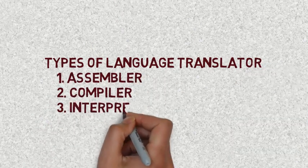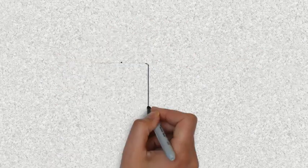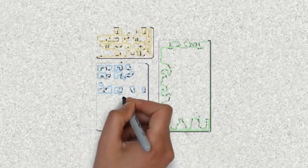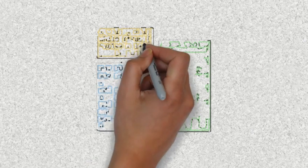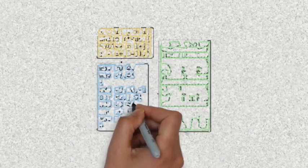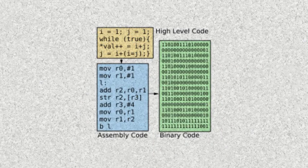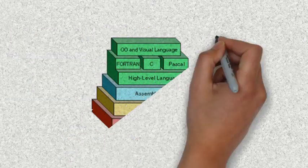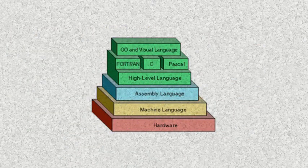We can translate the programming code into machine code. Machine level language is the same as low-level language. The compiler and interpreter can convert high-level programming language code into machine code.